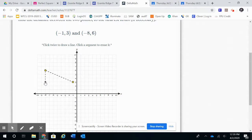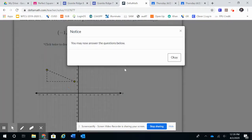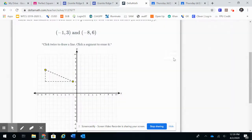To create the second side, again I'm going to click it, drag, click it again, and then I get a pop-up that says you may now answer the question below, so I'm going to click OK.